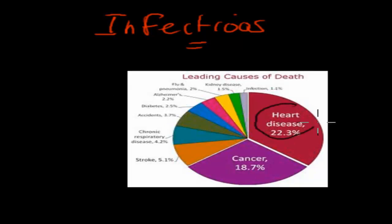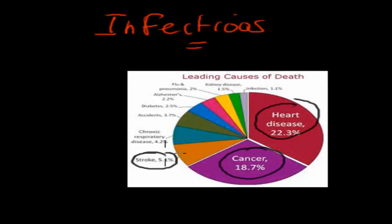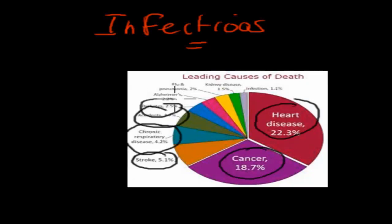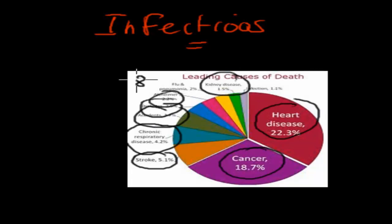Heart disease is number 1, cancer number 2, stroke number 3, chronic respiratory disease number 4, then accidents, diabetes, Alzheimer's, and kidney disease. From those top 10, 8 of them are non-infectious.